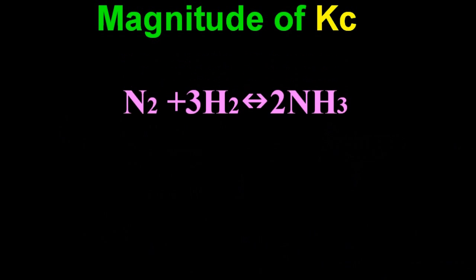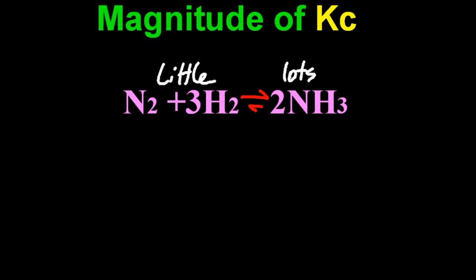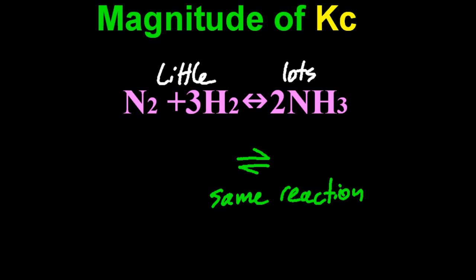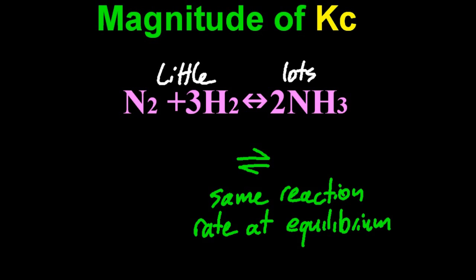Hold on. If there's lots of ammonia and only a little of the reactants, surely it's not in equilibrium anymore — surely the forward reaction is faster than the reverse reaction. No. It's equilibrium. By definition, the forward and reverse reactions are equal. Their rates are equal — the same reaction rate at equilibrium. Otherwise you're not at equilibrium; you're somewhere else.